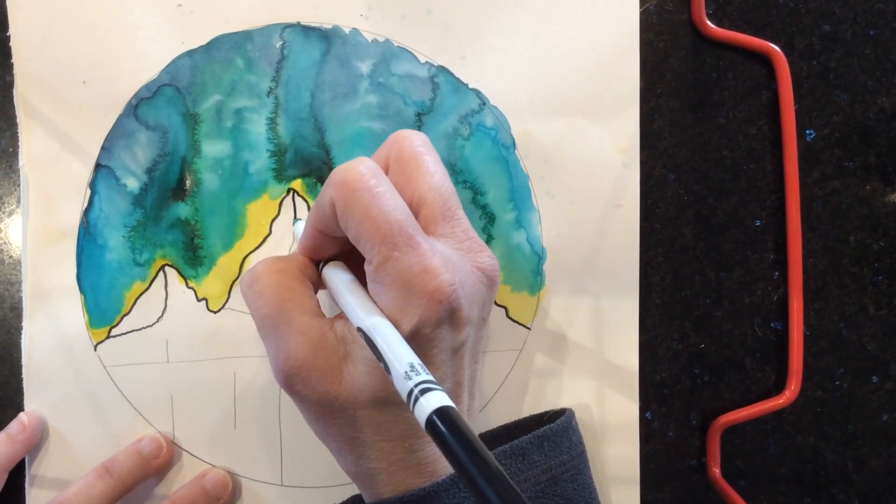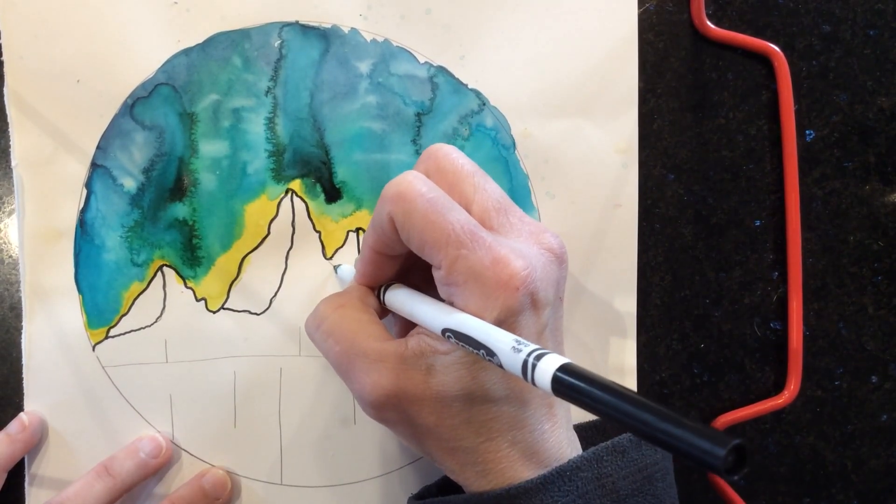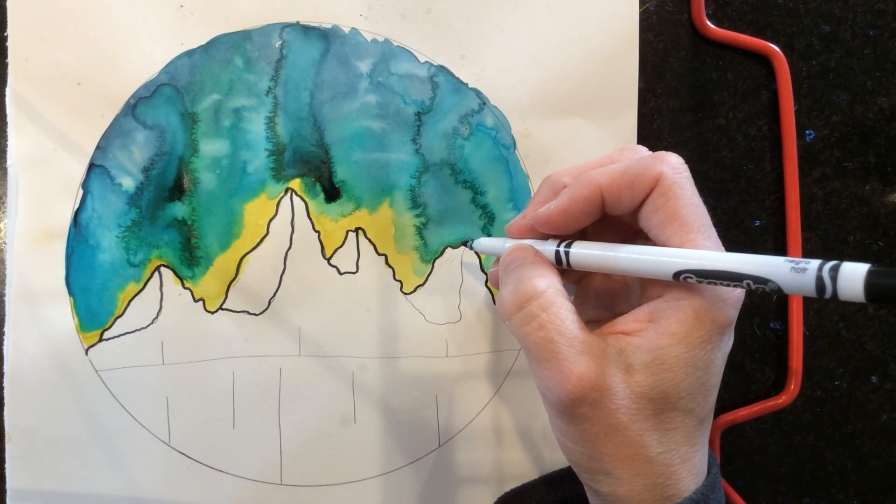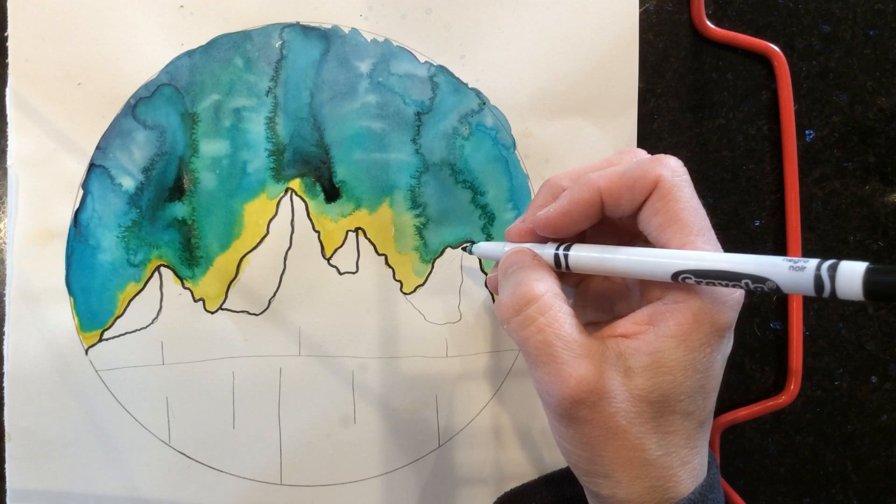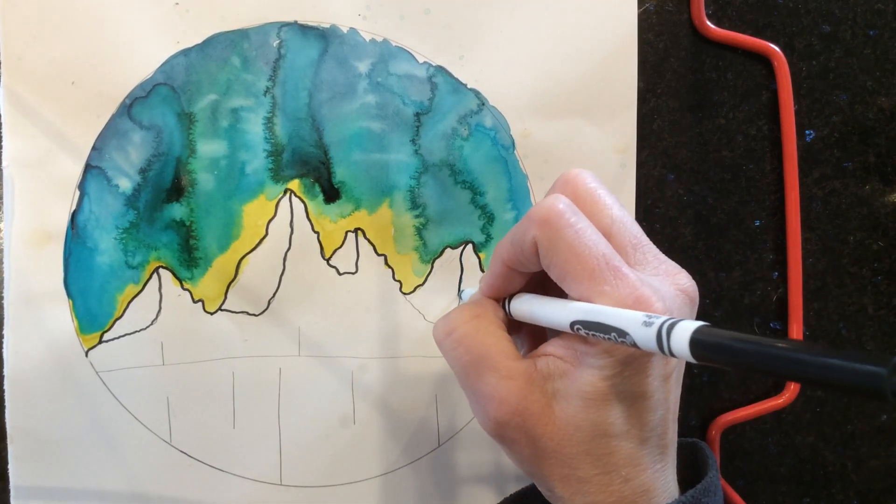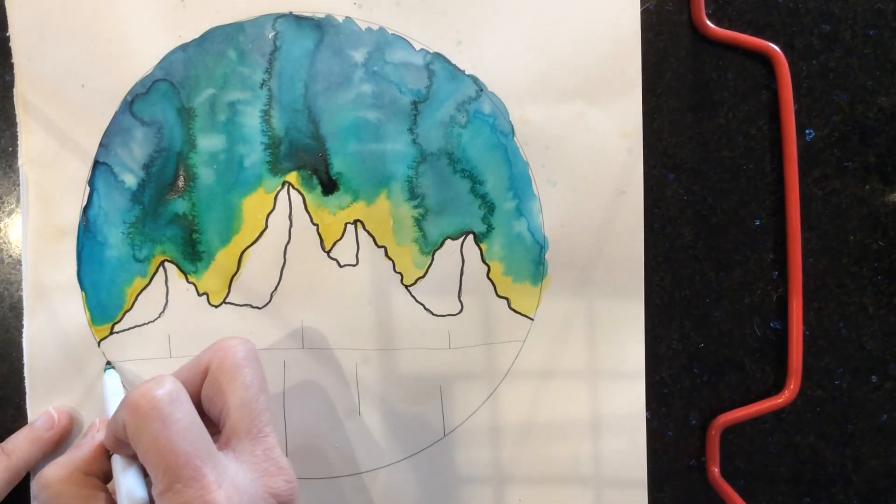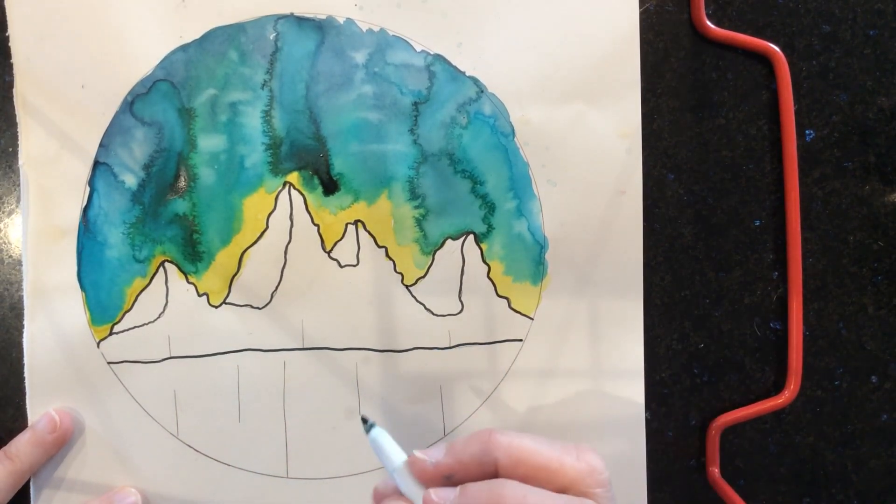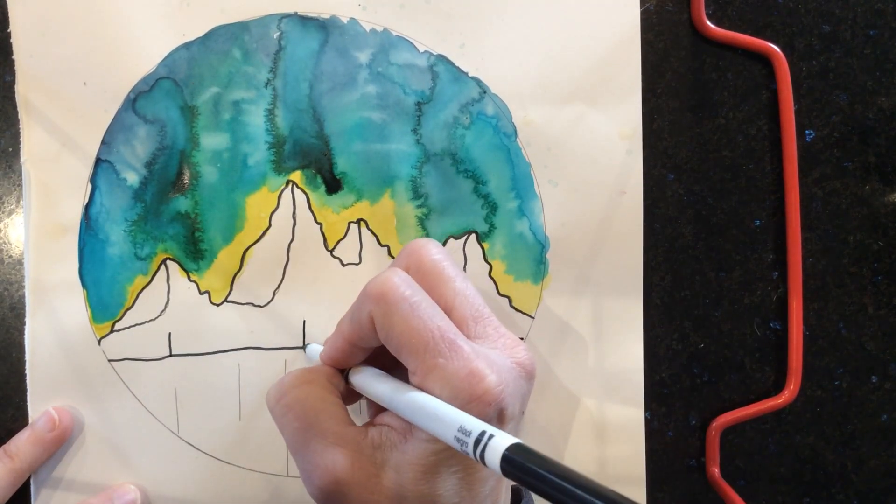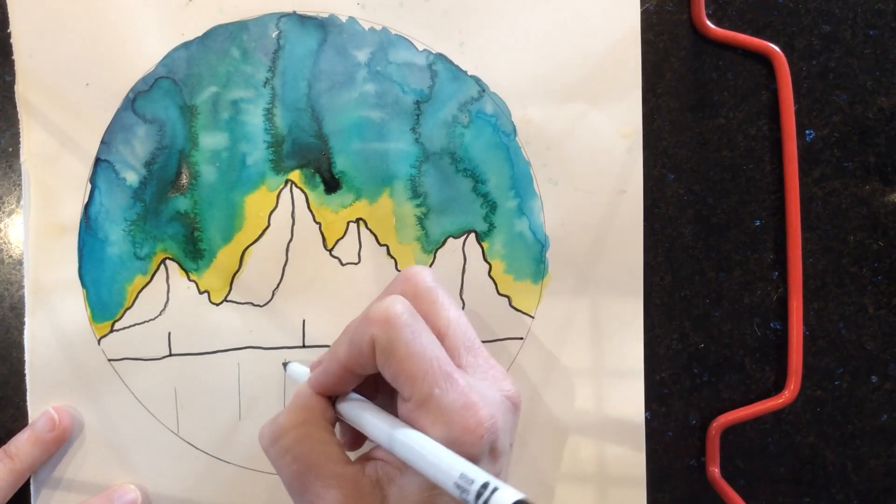Now, I'm going to go over this line. And it's okay if this line is bumpy because it's a horizon line and it means it's the ground. And the ground is very rarely straight. I'm putting in my trees.